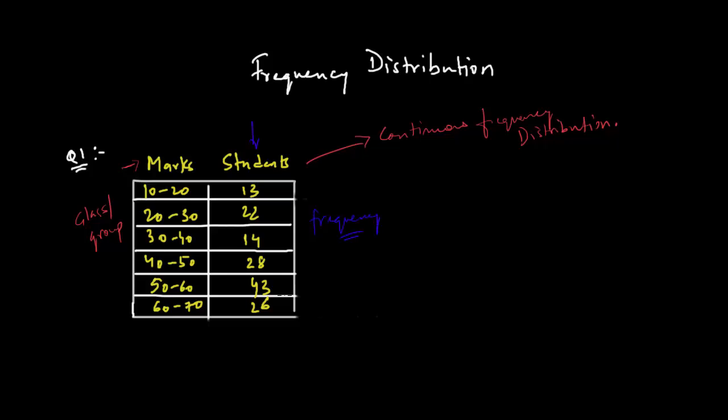Now, I want you to understand this very carefully because going forward in the main questions when we go on to solve them, you should be absolutely clear about all these small definitions that we are just going to cover. So, the first term that you will frequently hear is frequency of a class. So, whenever they ask you frequency of a class, always remember this over here is a class and this over here is the respective frequency. So, the frequency of the class 10 to 20 is 13. Similarly, frequency of class 20 to 30 is 22, 30 to 40 is 14, 40 to 50 is 28 and so on and so forth.